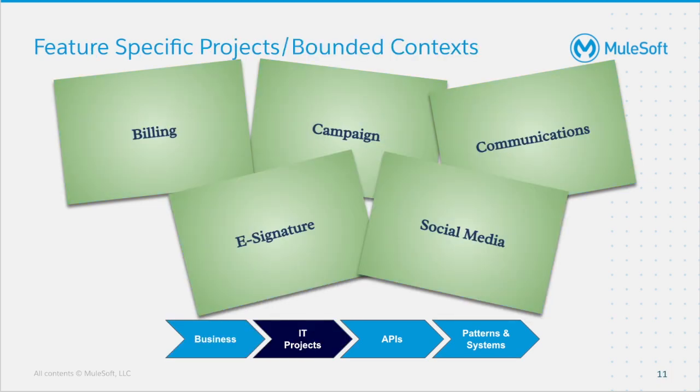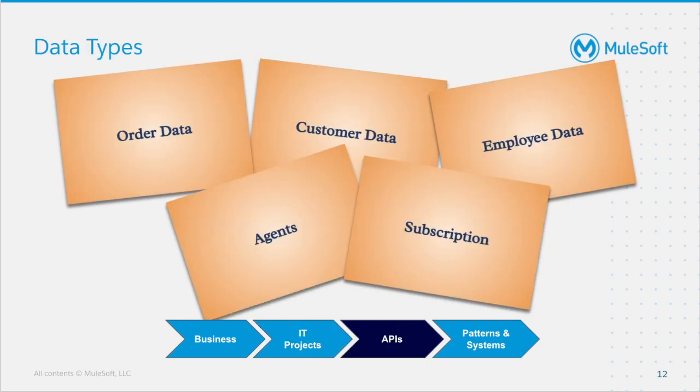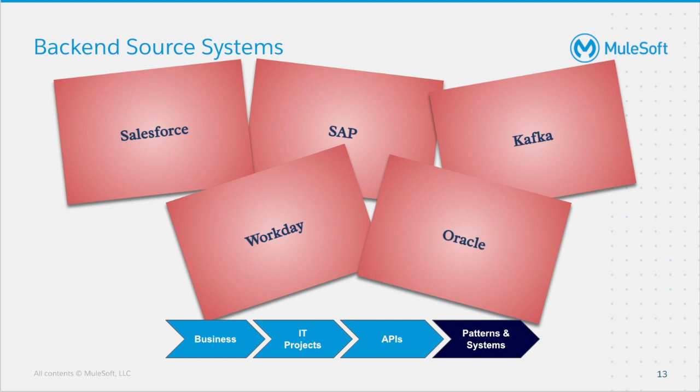I've applied the same approach to bounded contexts as a category name, and I will use this slide to identify my category values. I will do the same thing for data types and the same for backend source systems. Now that I've applied the same approach to each level in the top-down approach, it's time I showed you my categorization worksheet to help you understand better.